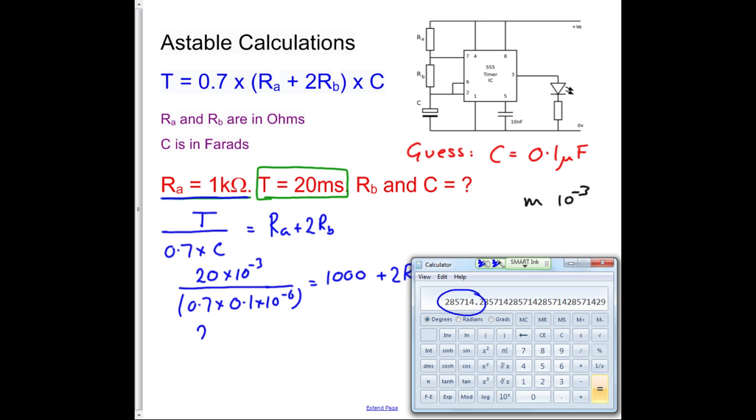So therefore, 286K equals 1,000 ohms plus 2RB, take the 1,000 onto that side, it becomes minus, so therefore 285K equals 2RB, divide that by 2, and you get 142K equals RB.